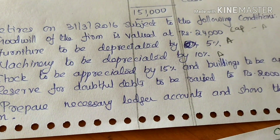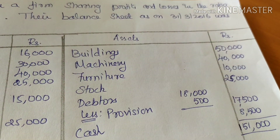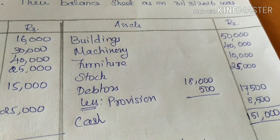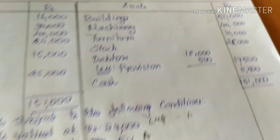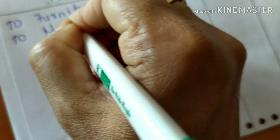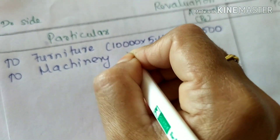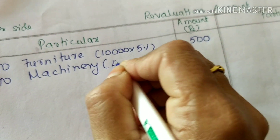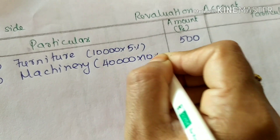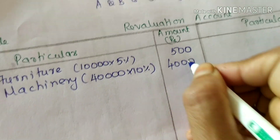Machinery is to be depreciated by 10%. Machinery value is 40,000. So 40,000 into 10% = 4,000. Depreciation on machinery is 4,000.